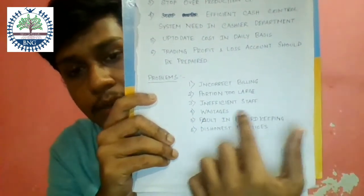The third reason is inefficient staff. When your staff is inefficient — suppose they do not maintain the standardized recipe or are not properly skilled — they create too much wastage and serve too large portions, so wastage and food cost will both be high.